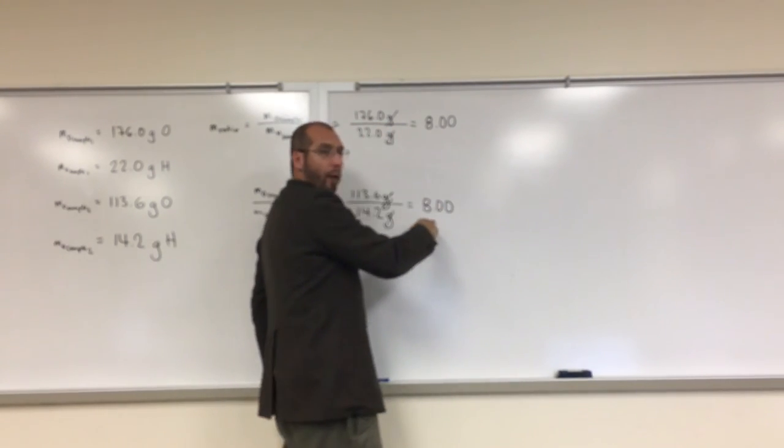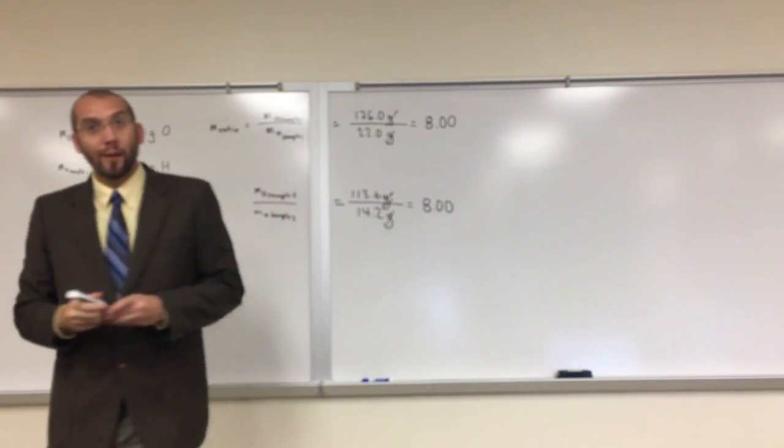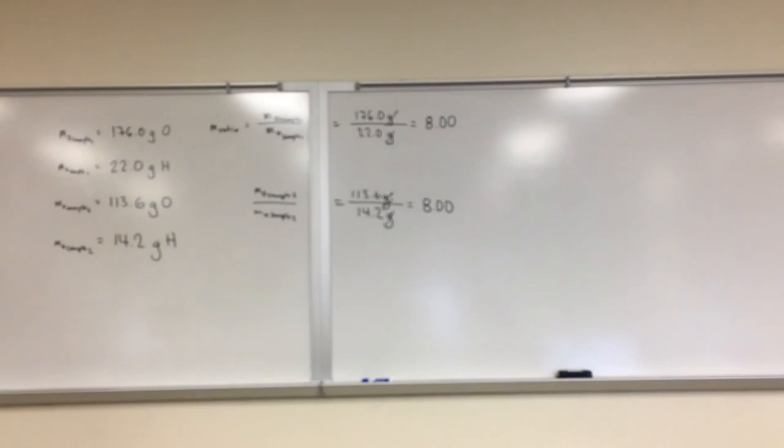Hopefully you see 8.00, 8.00. Those are the same number. So this, again, is another example that will prove the law of constant composition. Any questions on this one?